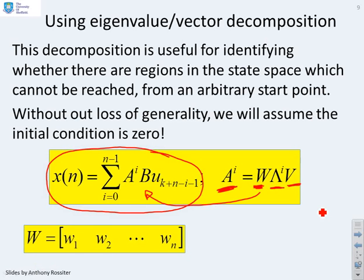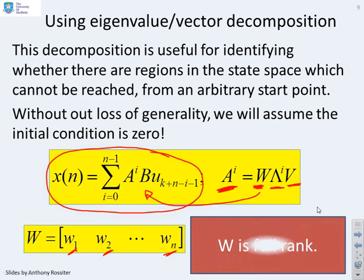I'm also going to recognize that the matrix w is given by the eigenvectors w1 to wn. If we assume you have distinct eigenvalues, then this matrix is known to be full rank.